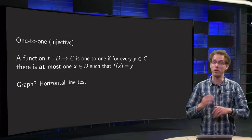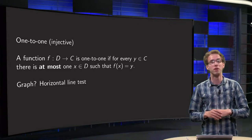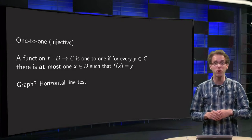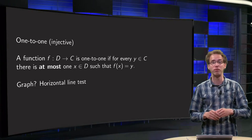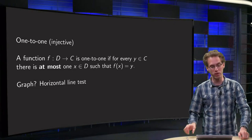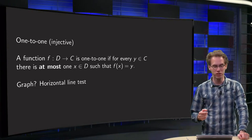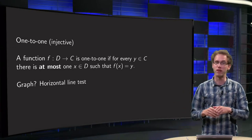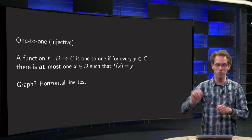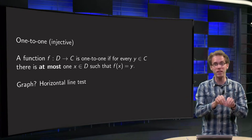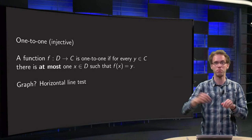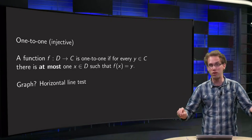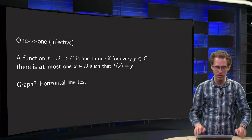You know the definition of one-to-one, or injective, but how can you see whether a function is one-to-one? In this video you will learn how you can use the graph of a function to see whether a function is one-to-one or not. So once again the definition: a function from domain to co-domain is one-to-one if for every y in the co-domain there is at most one x in the domain which is mapped to that particular y. So you cannot have two x's in the domain mapping to the same y in the co-domain.